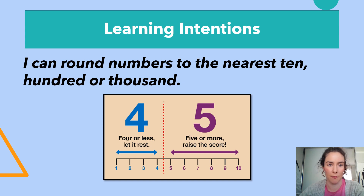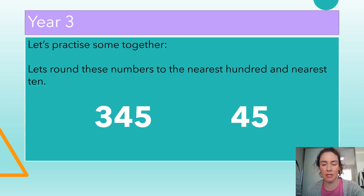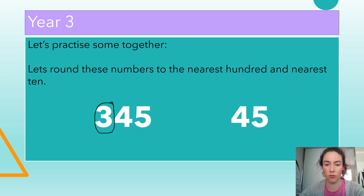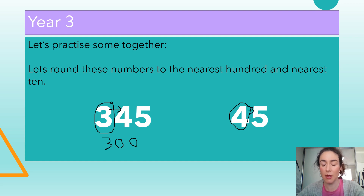That's a rhyme to help you remember. Start by watching the video — click the link from your PDF and watch the video which explains how to round numbers. Let's practice rounding together. For the first one we are rounding to the nearest hundred. The digit in the next column is a four — four or less, we round down. So 300-something rounds down to 300, not up to 400. For rounding to the nearest ten: the tens digit is four, and the next digit is five, so we round up — 45 rounds up to 50.